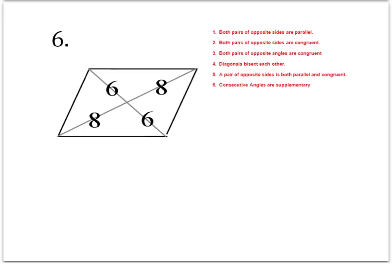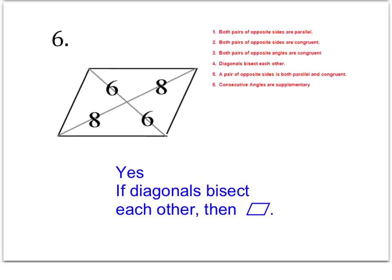Number six gives us information about diagonals, and test number four is the only test that talks about diagonals — they must bisect each other. In this case they clearly do. Remember, bisect just means cut in half, so we know each diagonal is cut in half. So yes, this is a parallelogram: if diagonals bisect each other, then it's a parallelogram.